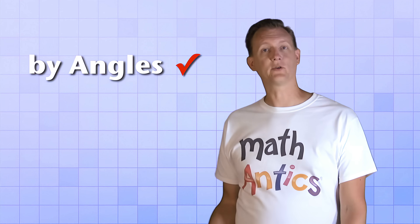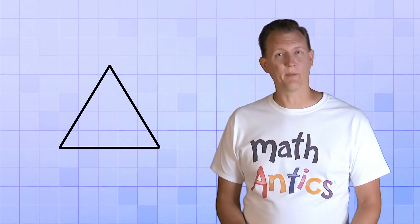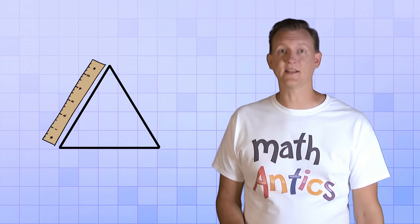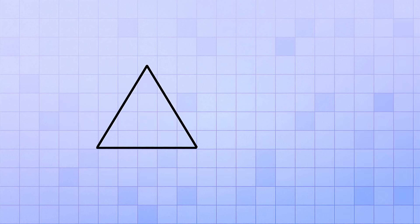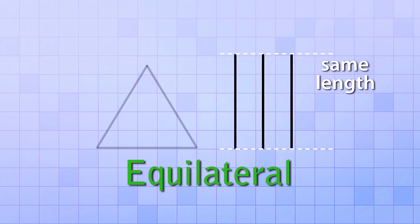Classifying triangles by angles is pretty simple. But we can also classify triangles by their sides. If we pay close attention to the length of each side of a triangle, we can see that there are three possibilities. First of all, if all three sides of a triangle are exactly the same length, then we call it an equilateral triangle. It's a long word, but it's easy to remember because it sounds like it has the word equal in it.